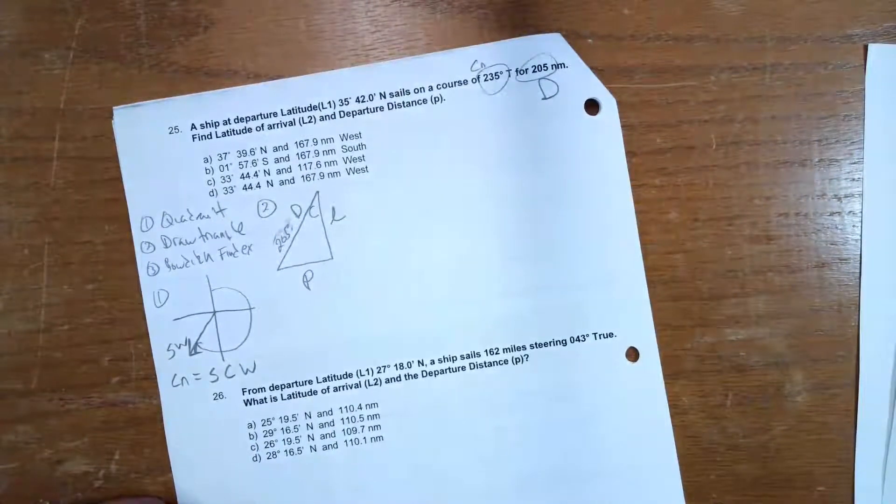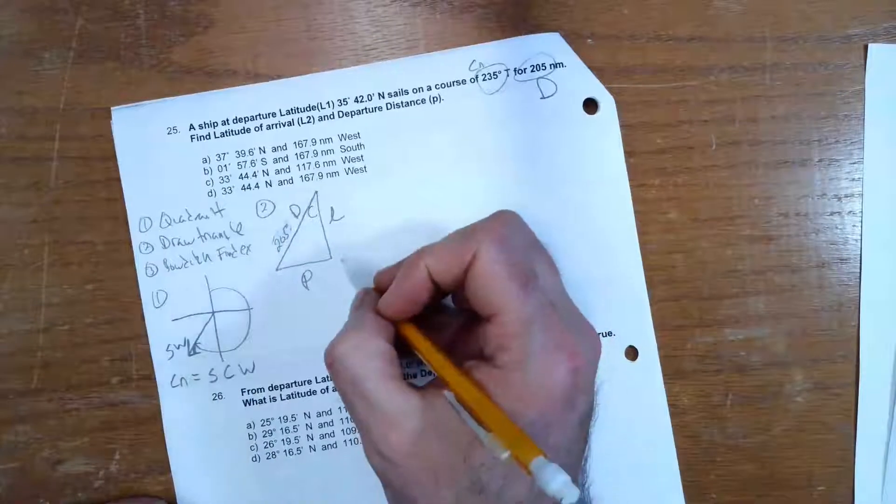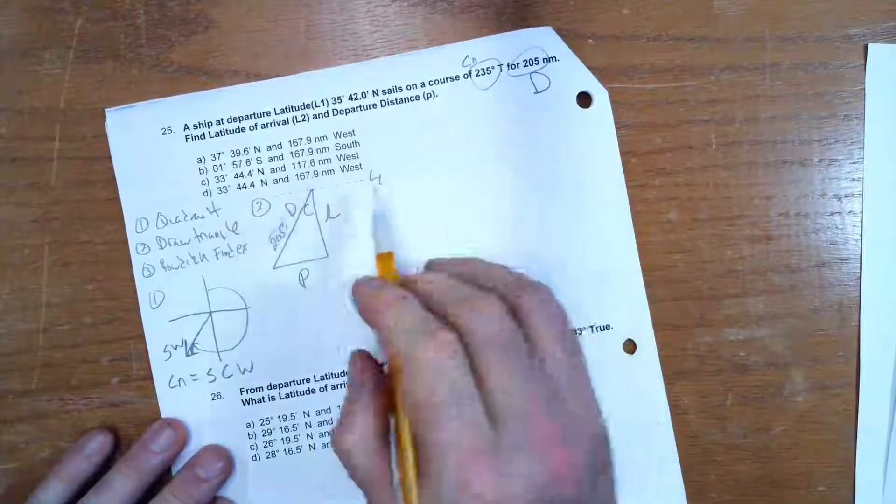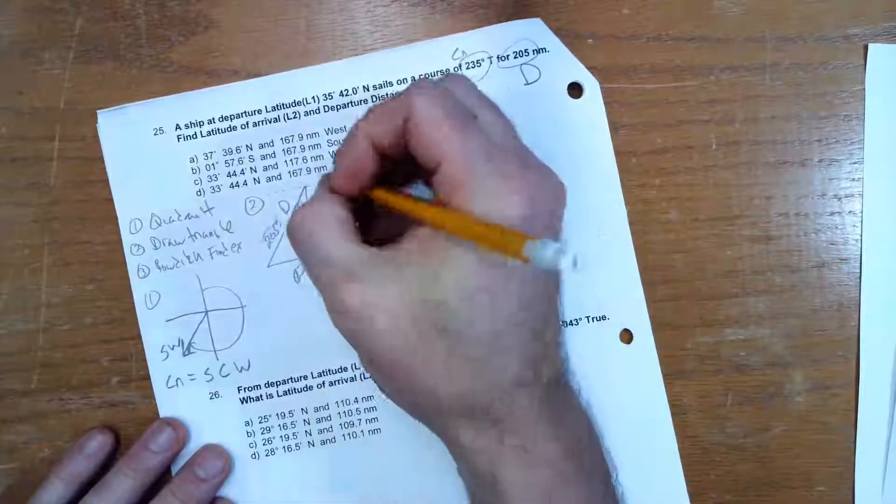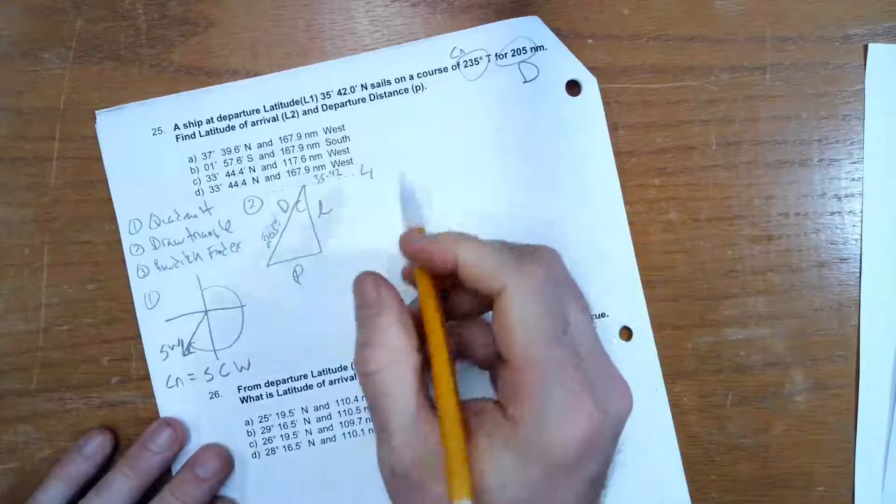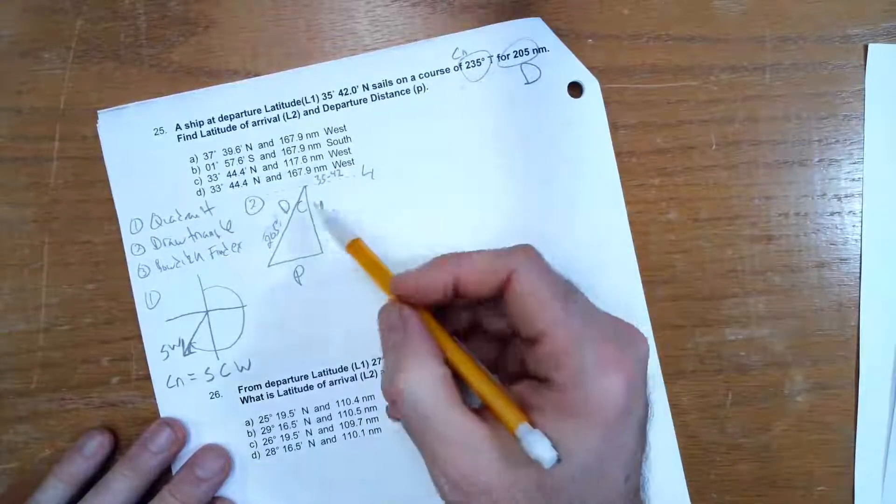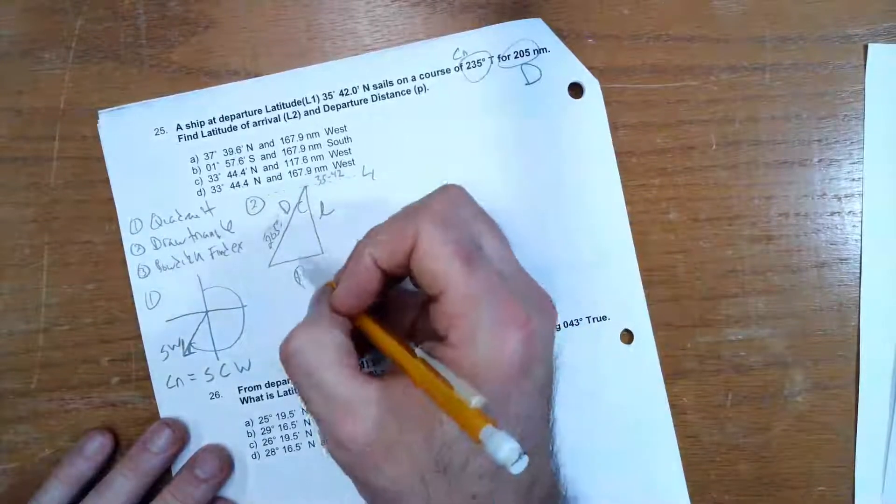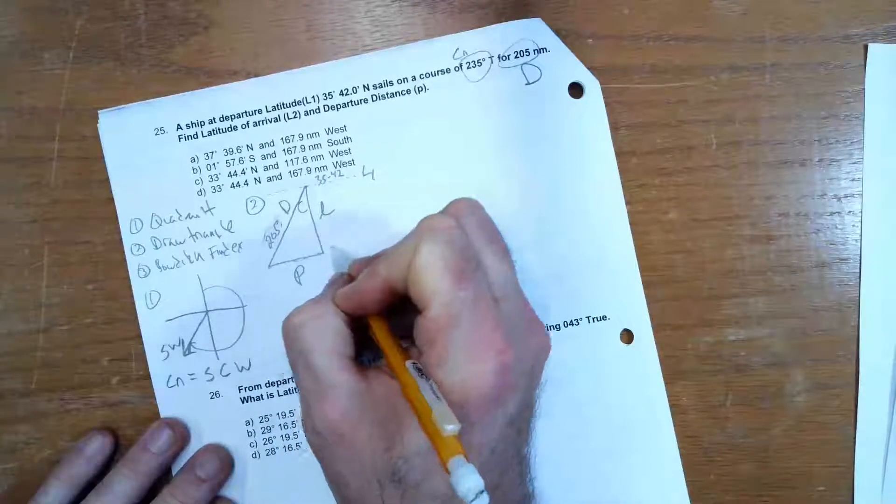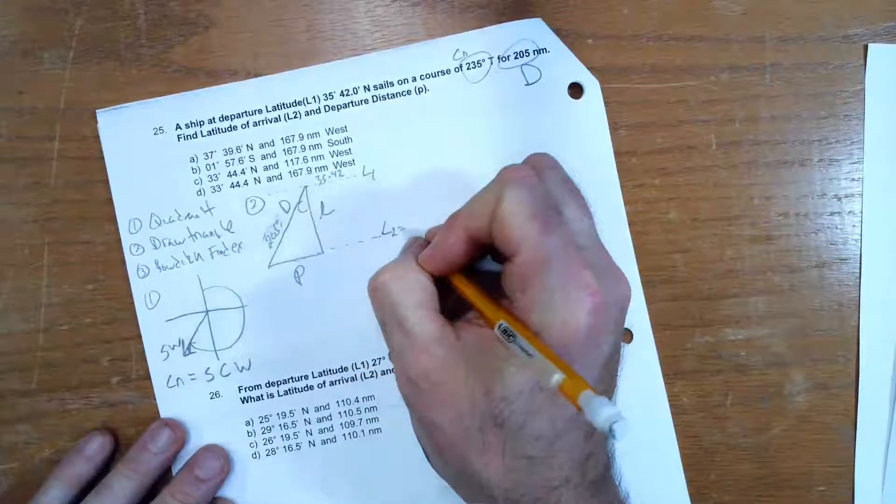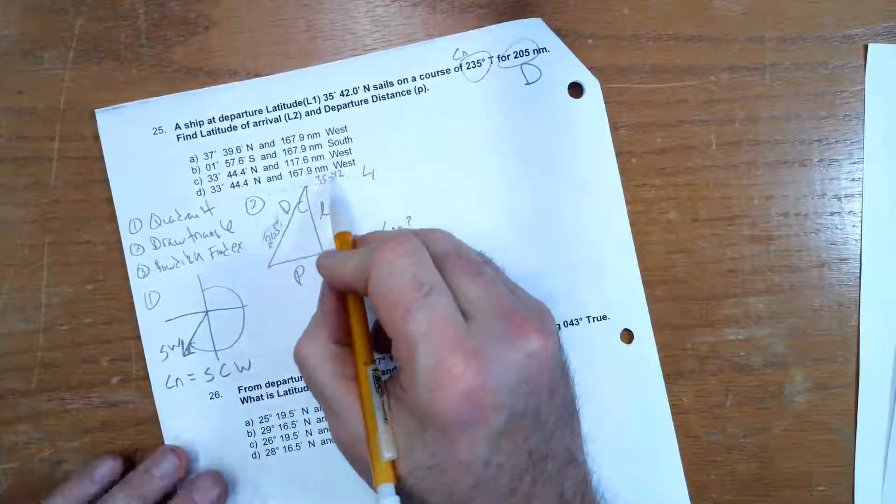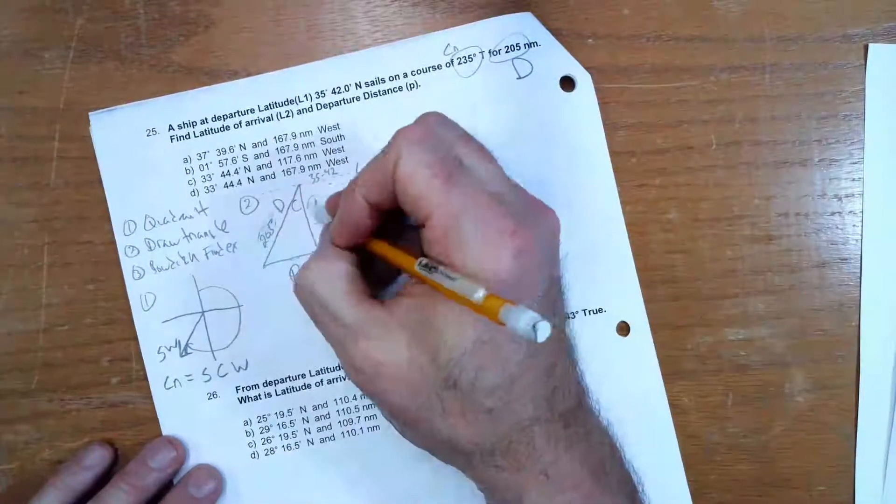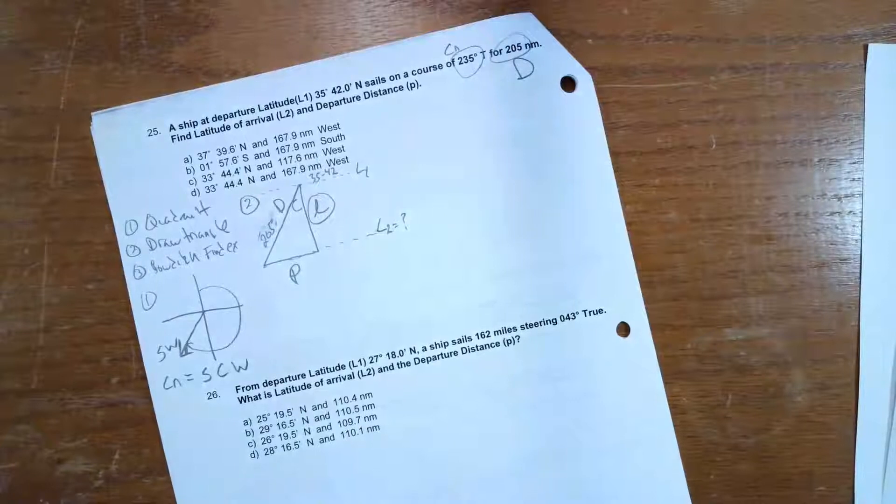And so what they want to know is, what is the latitude of arrival? Well, I can draw a little bit more here. This is actually L1 up here. This is where I left from. That's 35°42'. And I went 205 miles on a course of 235°. And I end up down here. This is latitude 2. And what they want to know is, what is that? So I started at 35°42'. If I go 205 miles on a course of 235°, what is that new latitude? So now I have to calculate little L.